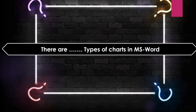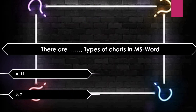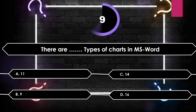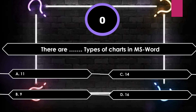There are how many types of charts in MS Word 2007? Options: 11, 9, 14, 16. The answer is 11.